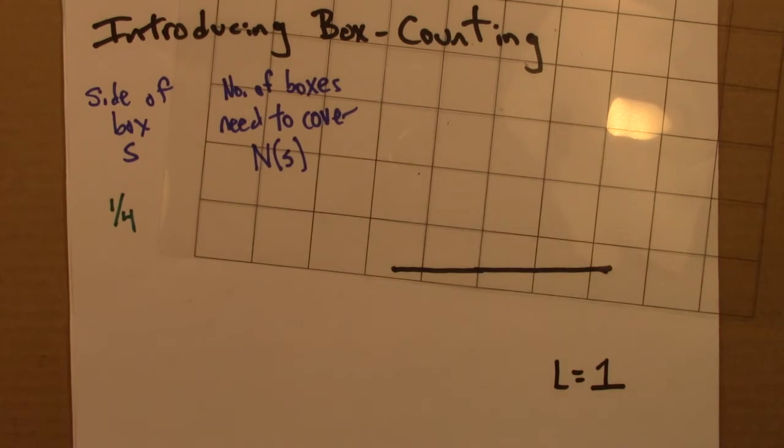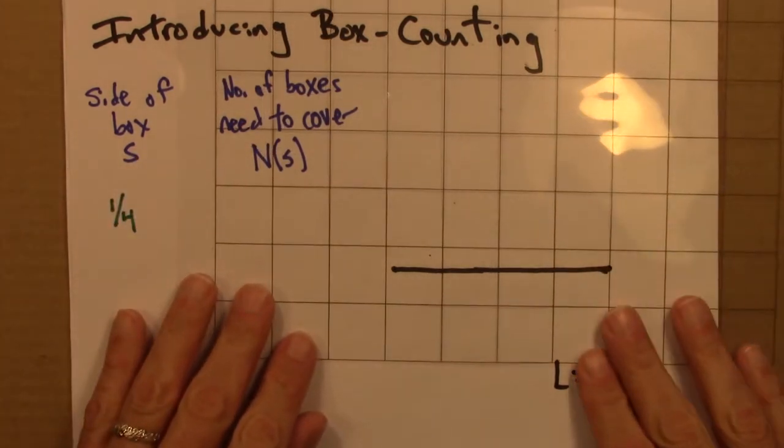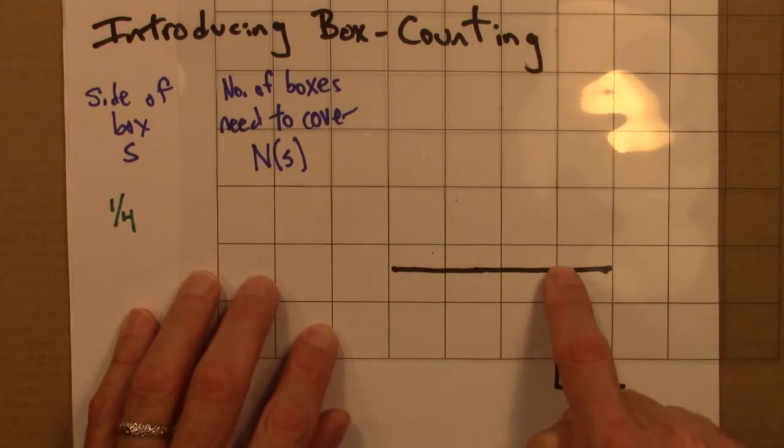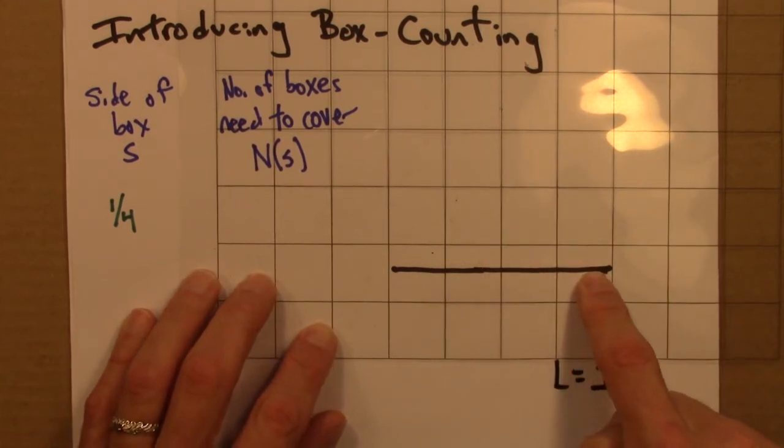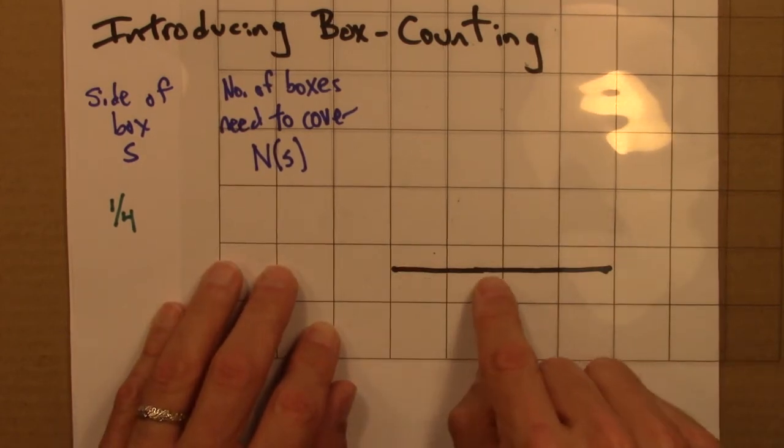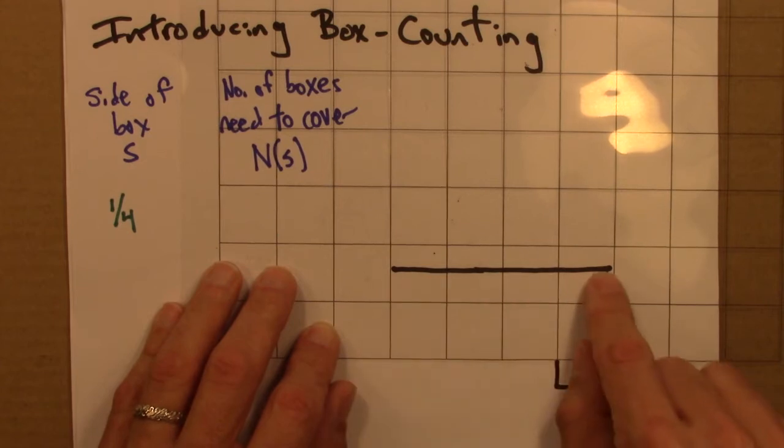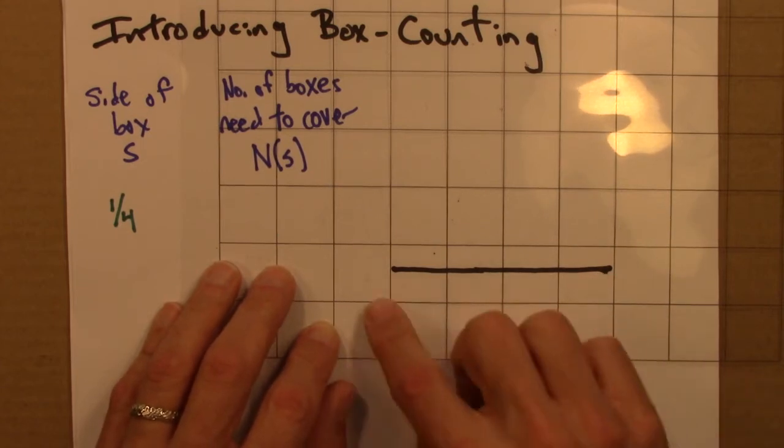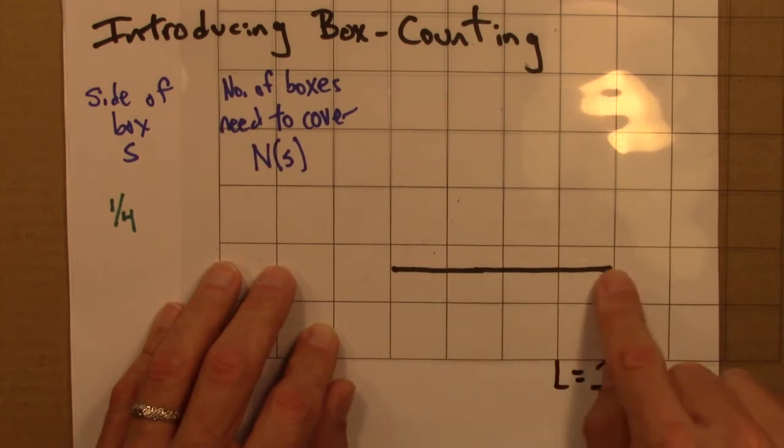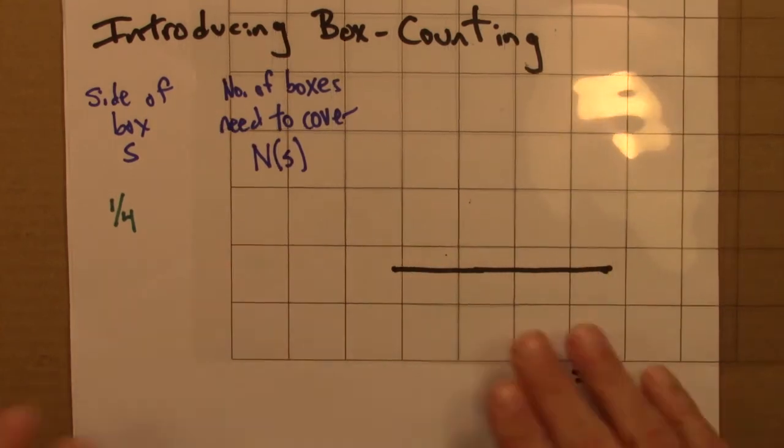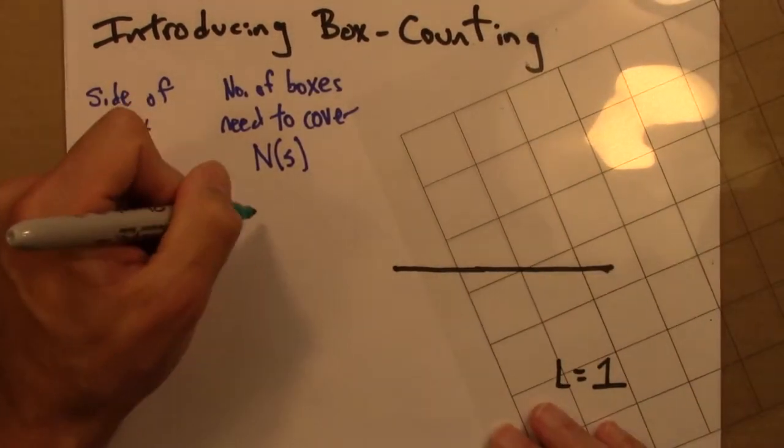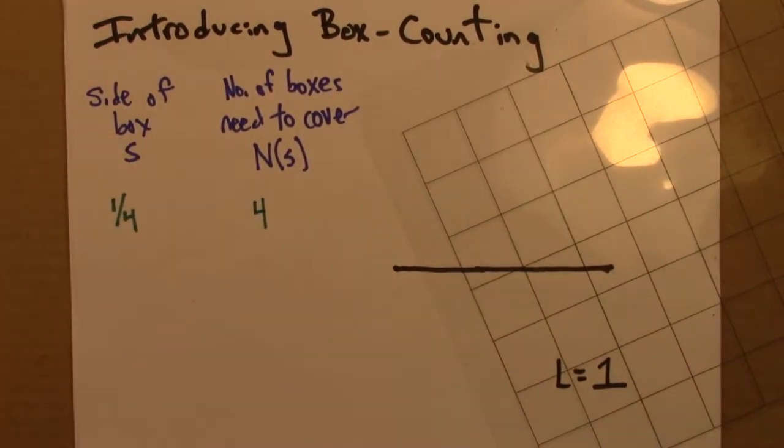So then how many boxes does it take to cover this line? Well, 1, 2, 3, 4. And I've covered it. So maybe I'm going to decide to sort of always line the box up to the left. And then I can see that just about exactly 4 boxes cover this. So the idea is I want to have boxes that completely obscure the shape, cover all of it. So I just need 4. The number of boxes needed to cover is 4. So far, so good.